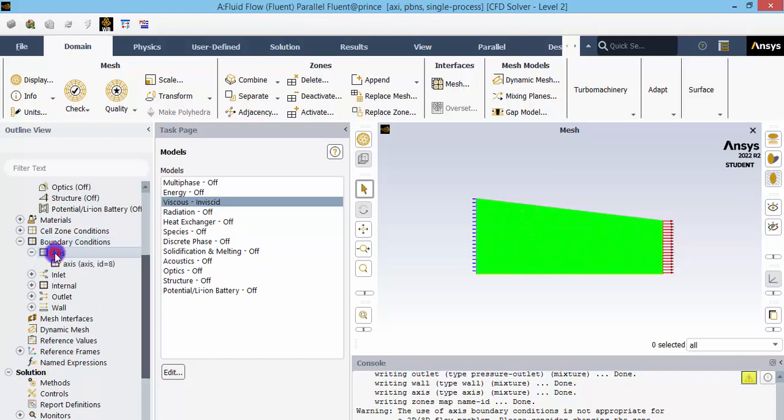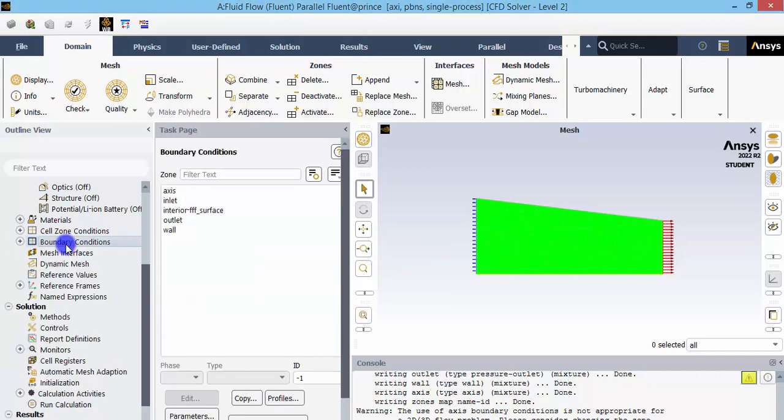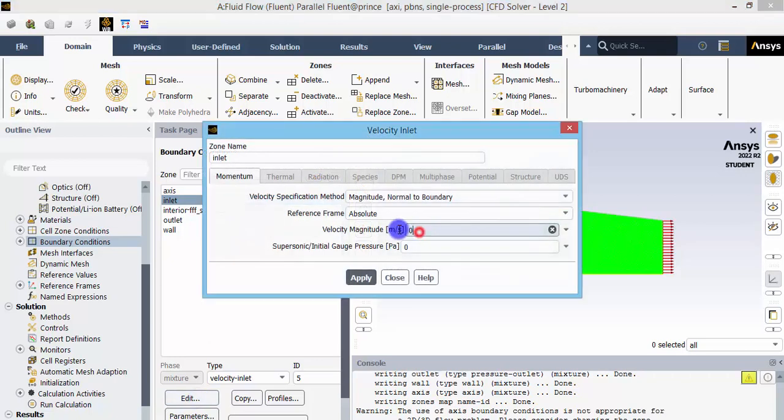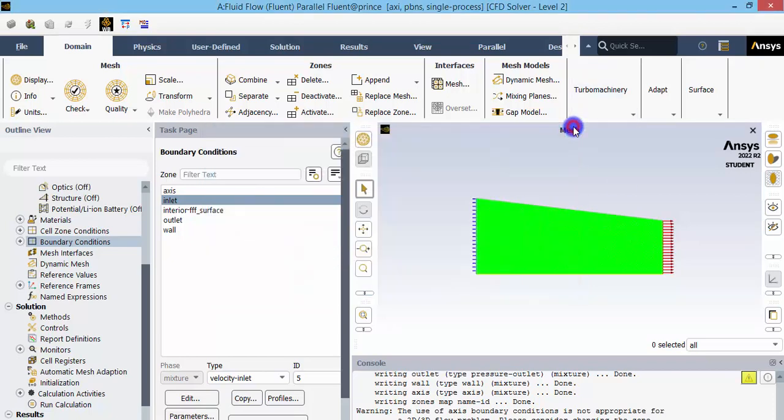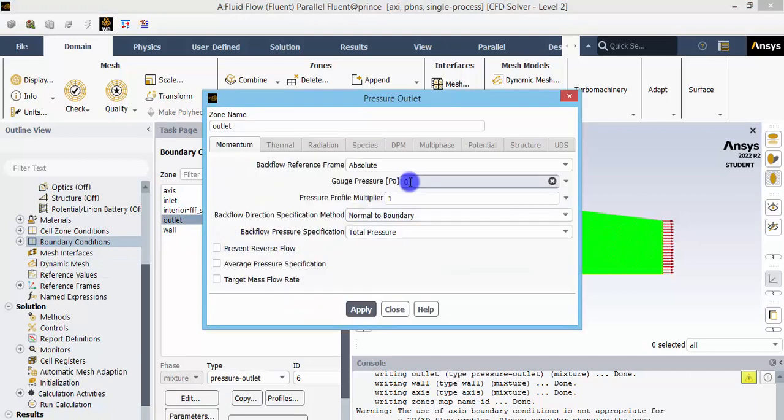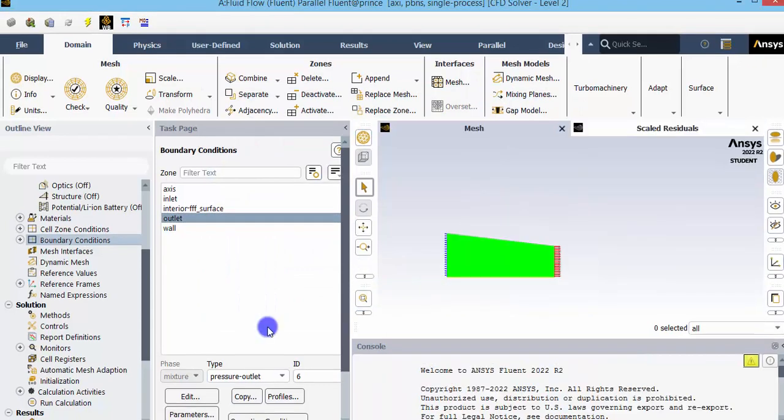Then provide the boundary conditions. Axis is already selected. If we double click the boundary conditions, we can see the list of boundaries that we have named earlier. The axis is already defined as axis because Fluent will understand the name of the boundaries that we give in the Design Modeler or ANSYS meshing. The inlet is defined as velocity inlet but we have to define the magnitude of that velocity. We have taken a value of 1 meter per second at the inlet during our theoretical calculation. Let's give the same value here. Click apply and close this tab. Then go to the outlet boundary. By default the gauge pressure is set as 0. Leave that as it is and close.